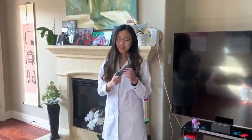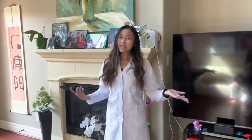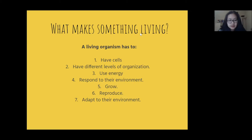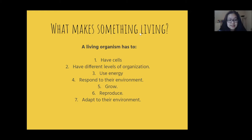However, this remote control is not living. What determines what's living and what's not? In order for an organism to be living, they have to follow a couple of requirements. These requirements are that they must be made up of cells, have different levels of organization, use energy, respond to environmental changes, grow, reproduce, and adapt. Some examples of living organisms outside of those seen around my house would be celery, bacteria, fish, and flatworms.